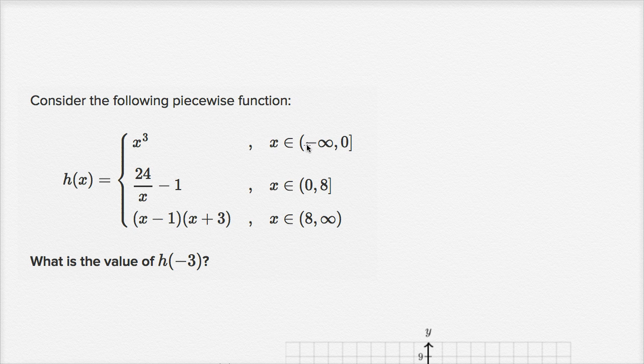We use this case if our x is between negative infinity and zero. And -3 is between negative infinity and zero, so we're going to use this case right over here. If it was positive 3, we would use this case. If it was positive 30, we would use this case. So we're going to use the first case again.